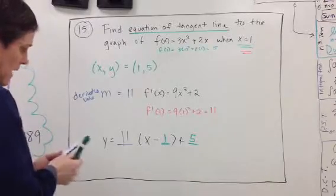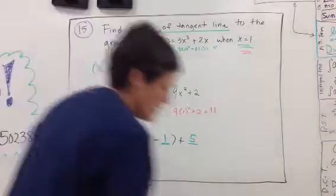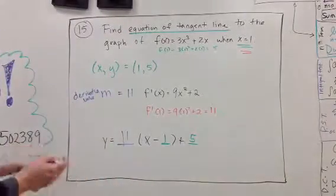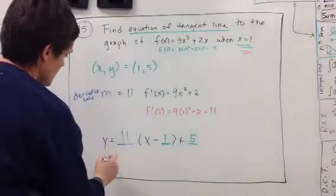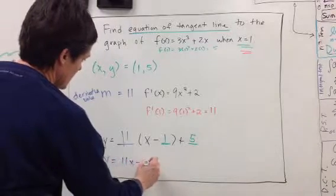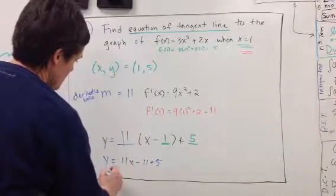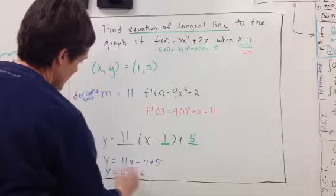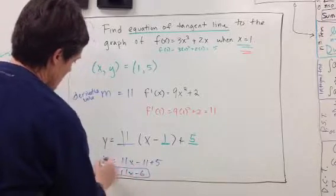We could stop there for the answer, but I know the answer key is in slope-intercept form. So that would be y = 11x - 11 + 5, which would be y = 11x - 6. That's what you're going to see in the answer key.